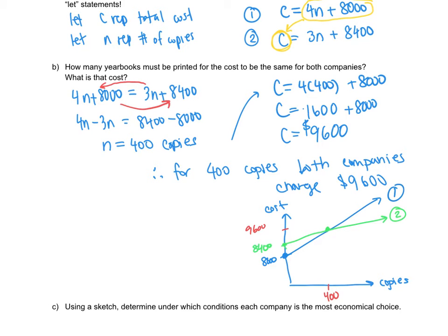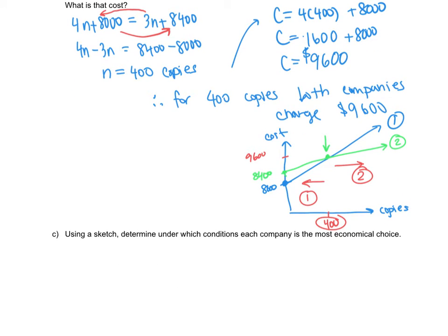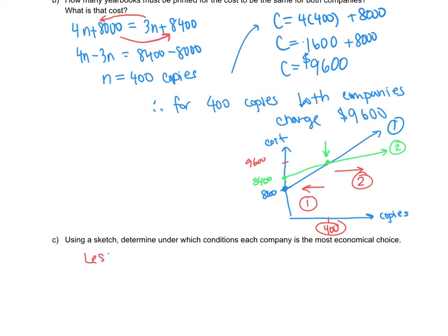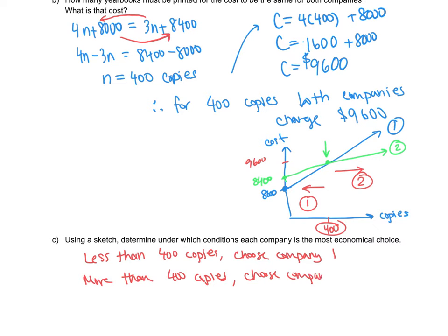It's not a very accurate graph, but it's more about the visual. Looking at this, when I am less than 400 copies, I want to choose company one because the blue line represents the cheaper cost. But when I'm more than 400 copies, I want to choose company two. So for less than 400 copies, choose company one; for more than 400 copies, choose company two.